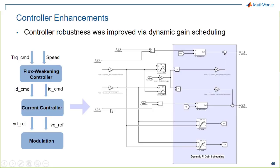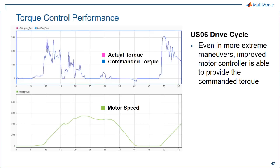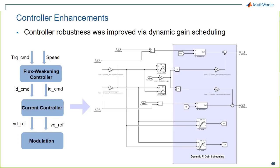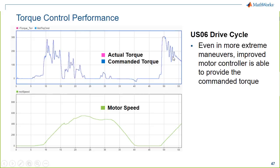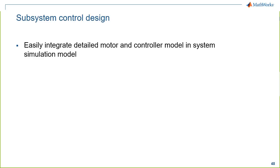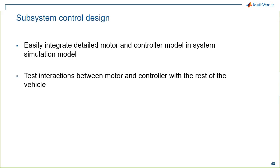Examining the motor controller more closely, it has a flux weakening controller and a PI current controller on ID/IQ errors, but it was using the same gains throughout. With a nonlinear plant model, you can't use the same gains for all operating points. Adding dynamic gain scheduling — where PI controller gains depend on where you are in state space — the motor controller becomes stable and handles high-power regions, providing the commanded torque. This demonstrates how you can identify and correct problems through system-level validation.